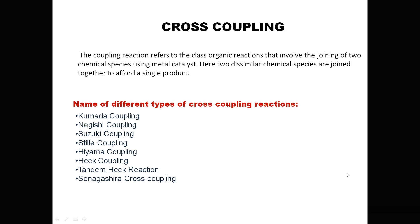Hello guys, welcome to this chemistry presentation. Today we learn about Kumada coupling reaction. Kumada coupling reaction is one of the cross coupling reactions. Coupling means the joining of two chemical species using any catalyst — this catalyst may be homogeneous or heterogeneous. Cross coupling means the joining of two dissimilar chemical species to afford a single product. There are various types of cross coupling reactions, for example: Kumada, Negishi, Suzuki, Stille, Yamamoto, Heck, and Sonogashira cross coupling reactions.